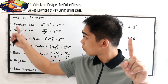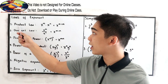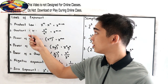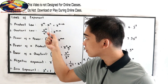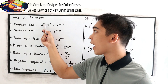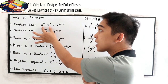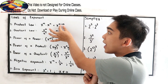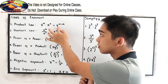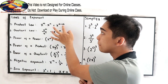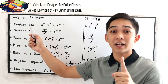Let's discuss the 1 to 7 laws. The first one is the product law. In the product law, if we have the same base — x raised to m times x raised to n — we're just going to add the exponents. So it equals x raised to m plus n. That is the product law.